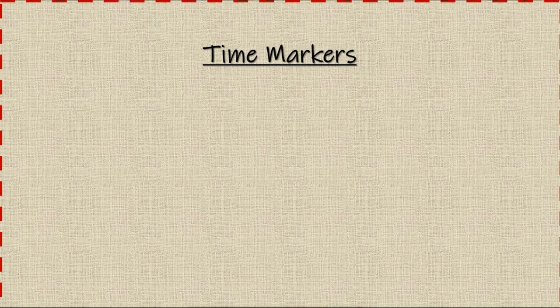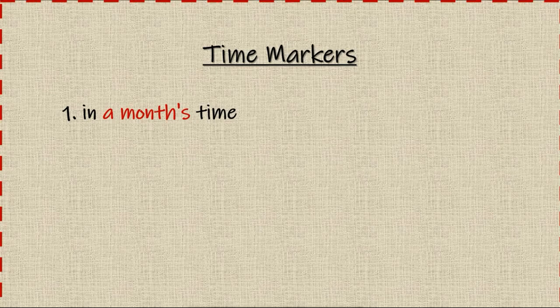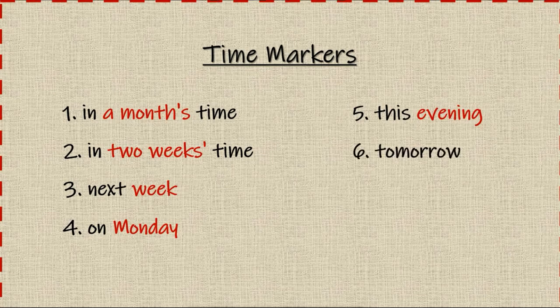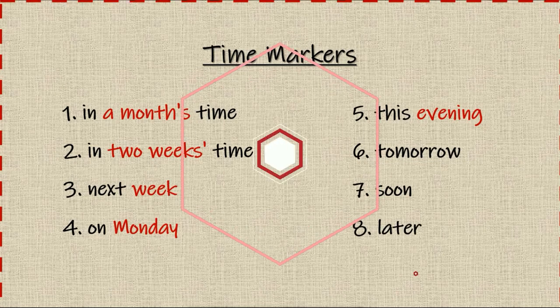Now let's talk about the time markers of this tense — the future tense. If you see one of these time markers in a sentence, you must use 'will.' The time markers are: in a month's time, in two weeks' time, next week, on Monday, this evening, tomorrow, soon, and later.